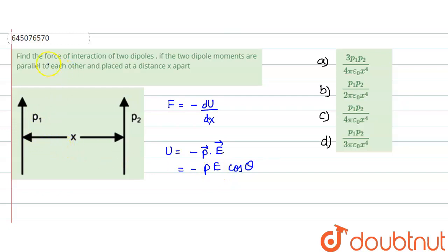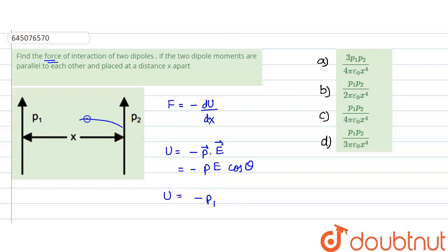We need to find the force of interaction between the two dipoles, so we calculate the potential energy for one of them. For this dipole with dipole moment p1, the electric field will be the field due to the second dipole, calculated at this location — the electric field E2.